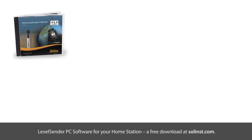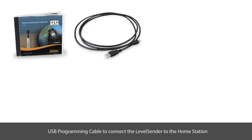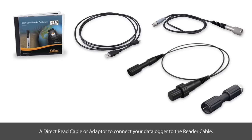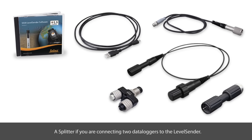You will also need some additional accessories: Level Sender PC software for your home station, which is a free download at Solinst.com for programming and viewing data; a USB programming cable to connect the Level Sender to the home station PC for initial setup; one reader cable for each data logger being connected to the Level Sender; and a direct read cable or adapter to connect your data logger to the reader cable.